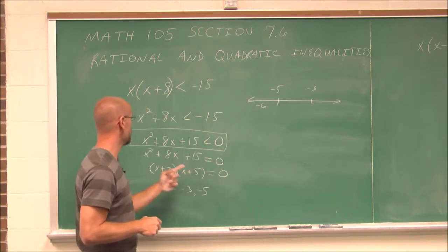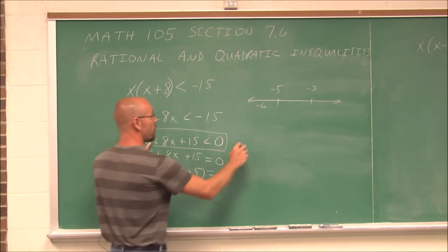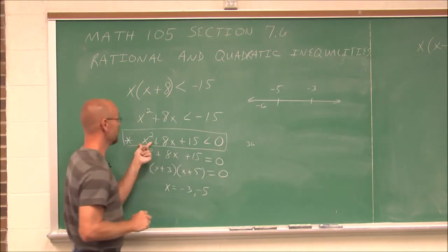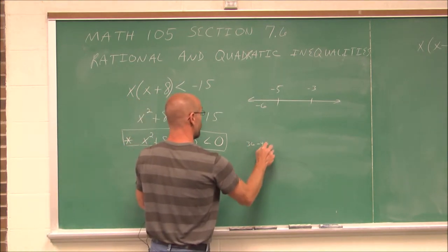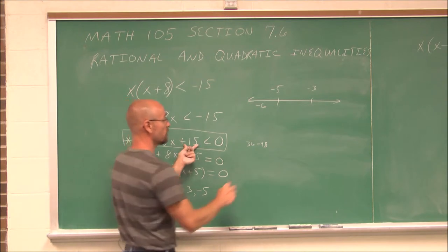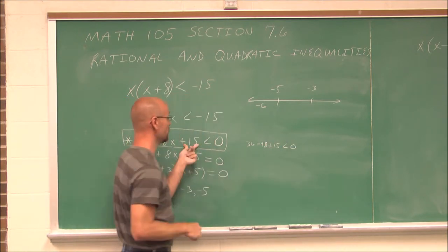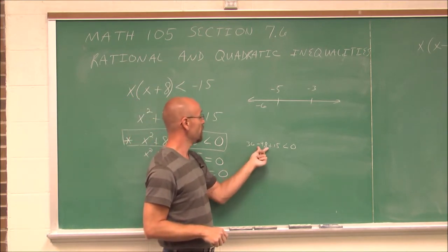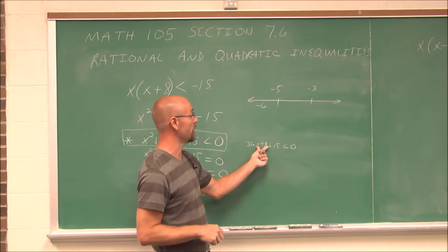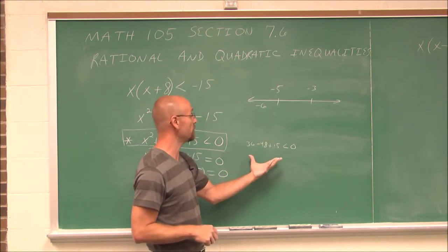If I plug that into here, I get negative 6 squared, which is positive 36. Negative 6 times 8 is negative 48, plus 15. Is this value less than 0? Well, 36 plus negative 48 is negative 12. Negative 12 plus 15 is positive 3 — it's a positive value.